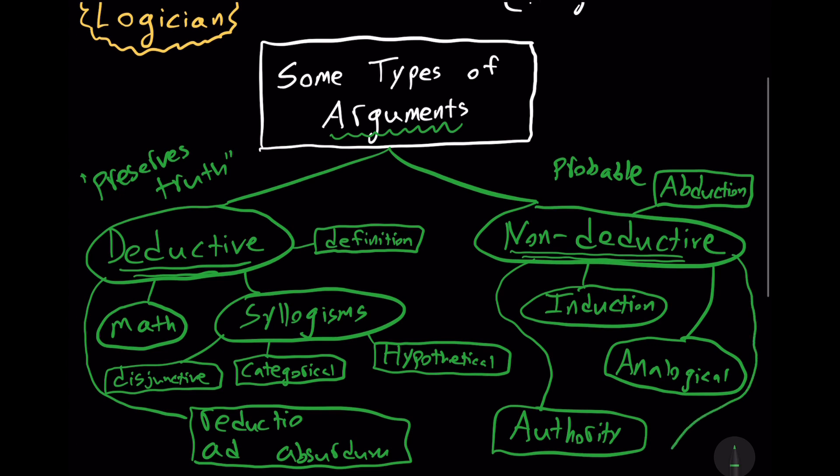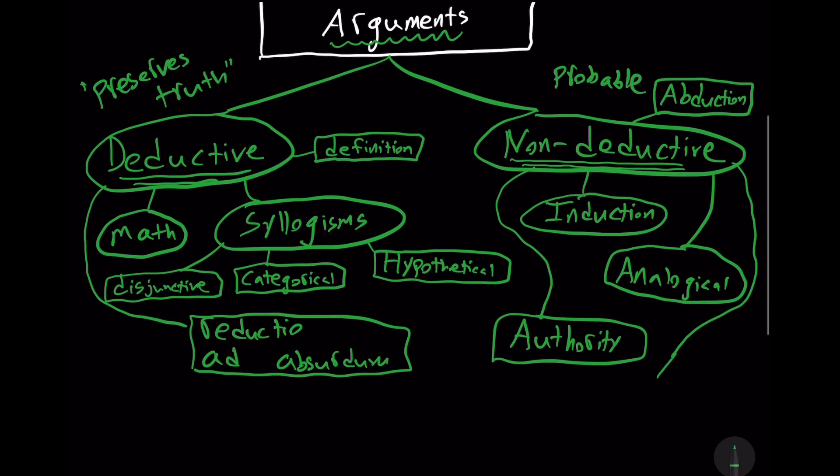There's also causal inference. For example, we notice an effect, and then we presume there must be some cause of that effect. That would be a non-deductive form of argument. So this is just a rough outline of possible types of arguments. There are other ways to classify these things, other ways to subdivide these things. But this is a good outline.